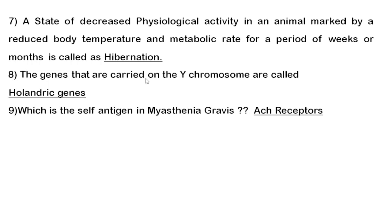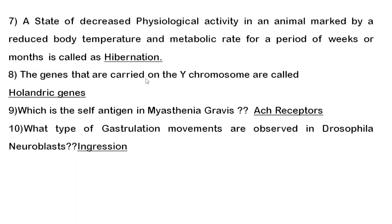Ninth question: the self-antigen in myasthenia gravis autoimmune disease is the acetylcholine receptor (AChR). Sometimes they ask about the target antigen for a particular autoimmune disease — you can find a tabulated column in Kuby's immunology book. In myasthenia gravis, auto-antibodies are directed against the neuromuscular junction.